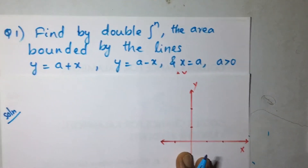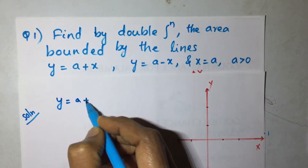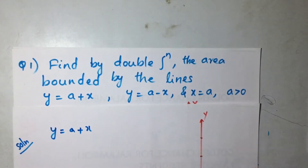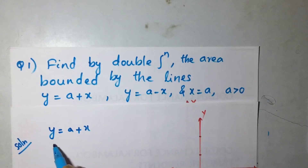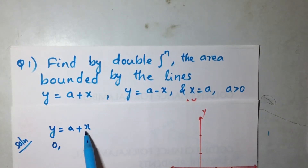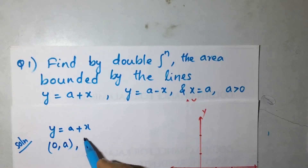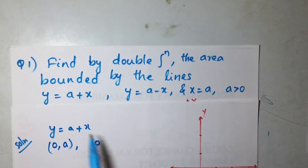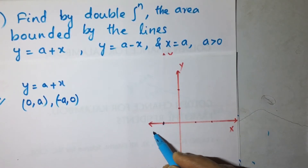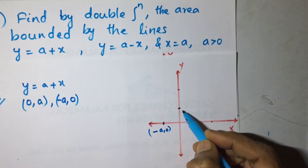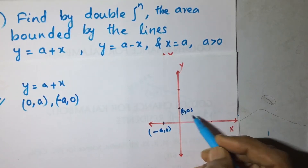The lines given are y equal to a plus x. To draw it, get some points: when x equal to 0, y is equal to a; when y equal to 0, x is minus a. So two points are enough to draw a graph. The points are minus a, 0 and 0, a.